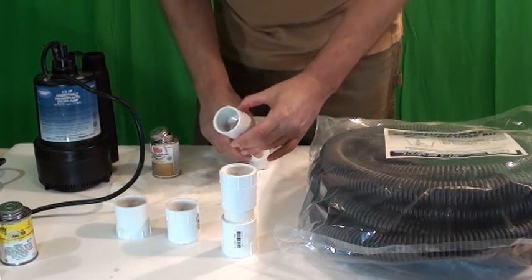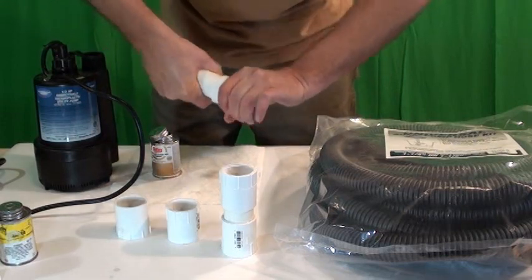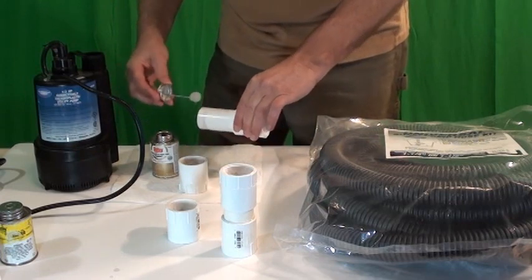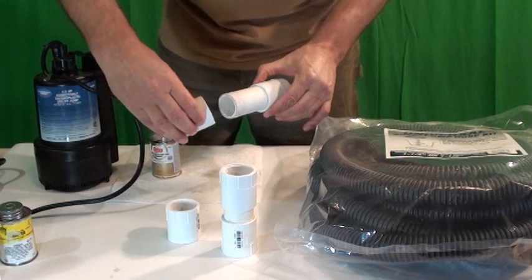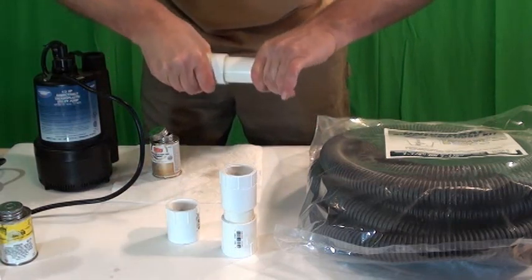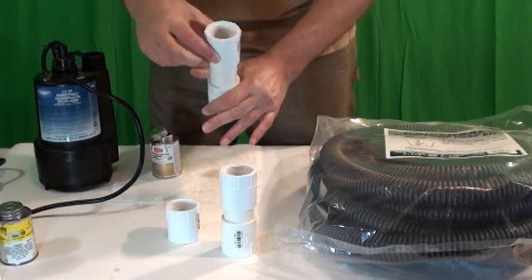You can do the fitting or the pipe. Either one. Twist it in. Do the pipe on this one. You can see it a little better. It's a chemical reaction. So it's locking the two together.